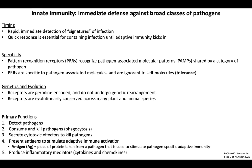An antigen is simply a piece of protein taken from a broken-down pathogen that is used to direct adaptive immune cytotoxic and memory responses targeting that specific pathogen. Lastly, many innate immune cells produce inflammatory molecules called cytokines and chemokines, which are essential for fine-tuning the different types of immune responses mounted against infection.